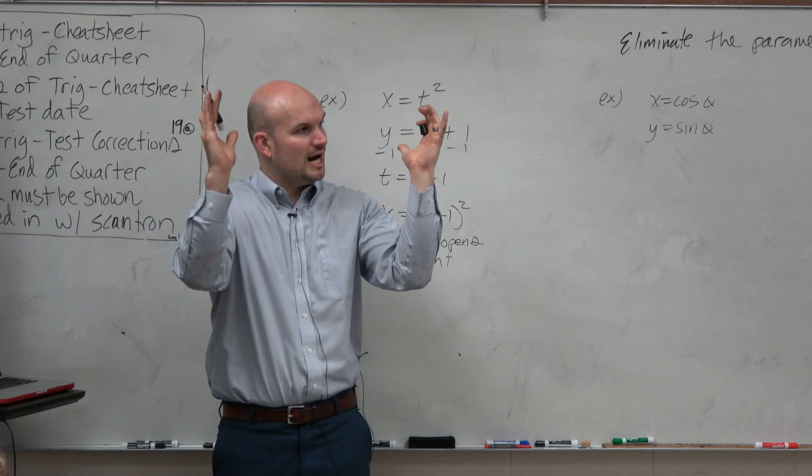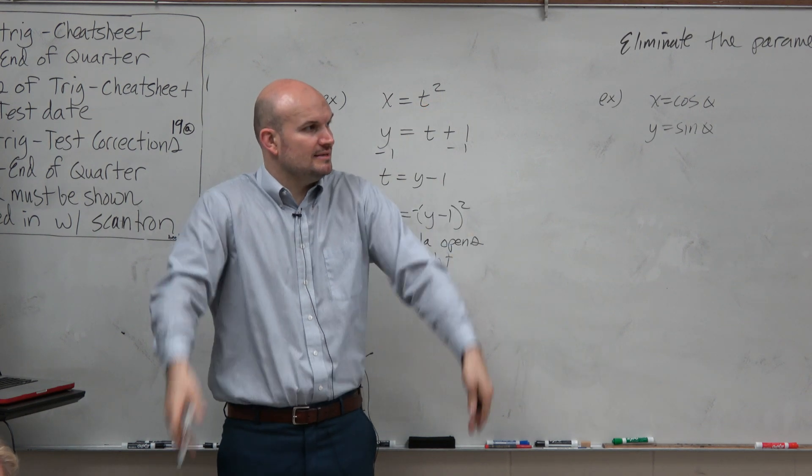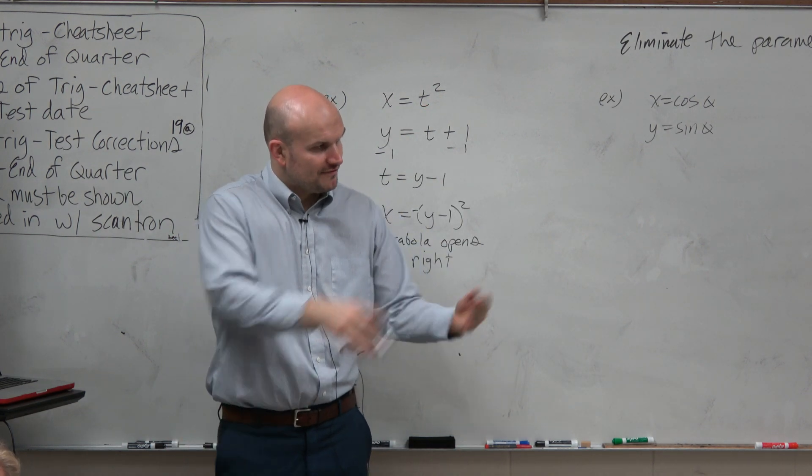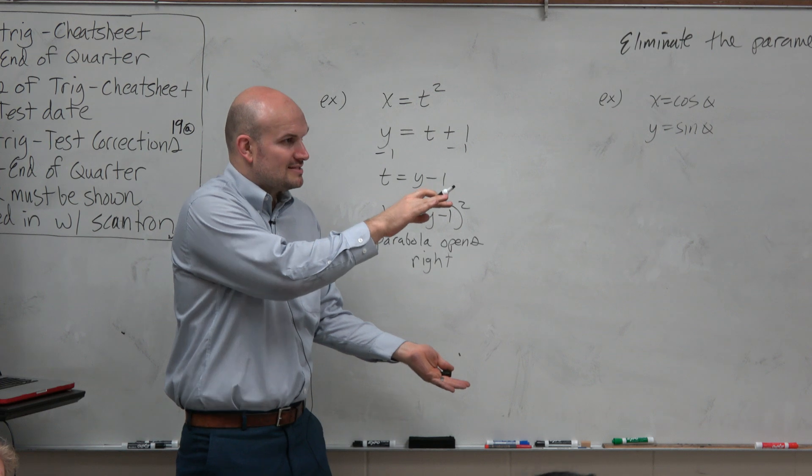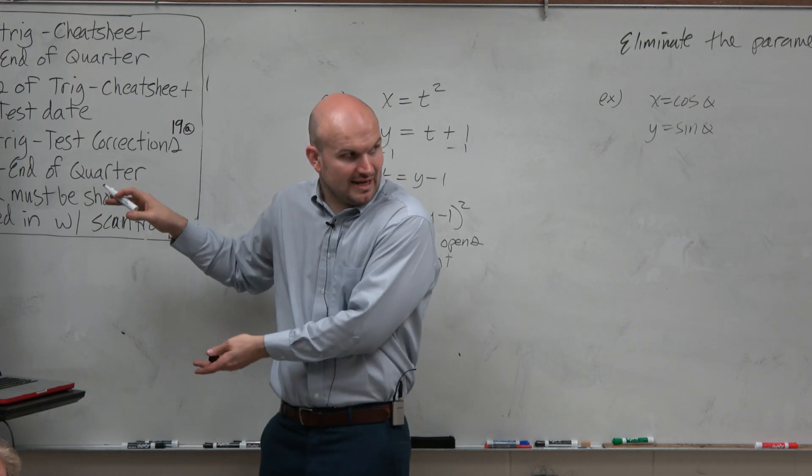If I have a parabola opening up and I want it to open down, I just make it negative, right? So if it's automatically positive, it opens to the right. Then if I want to make it to the left, I just make it negative, correct?